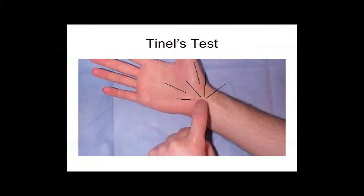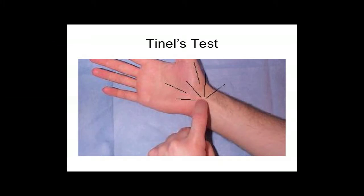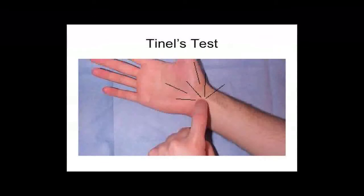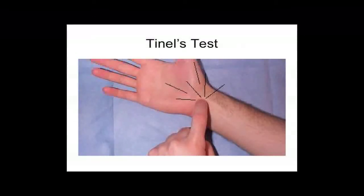Classic symptoms for carpal tunnel are numbness and tingling in the median nerve distribution — thumb, index, long finger, and maybe the thumb side of the ring finger. On physical examination, tapping on the carpal tunnel in an area where the nerve membrane is precarious and blood supply is poor can discharge the axon and produce a zinging electrical feeling in the fingers. That's Tinel's test.